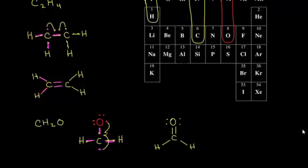That is the correct dot structure for formaldehyde. We can go ahead and double check the octet: looking at this carbon, that's two, four, six, and eight. And obviously there's also an octet around that oxygen as well. So this is the dot structure for formaldehyde.